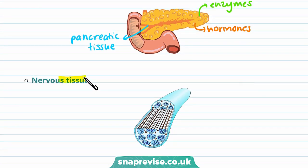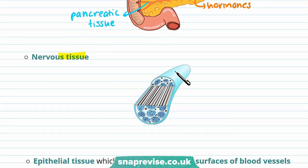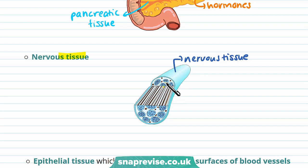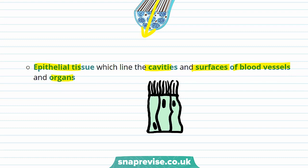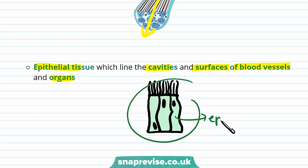Nervous tissue is another tissue. Nervous tissue allows information to be sent across the body through electrical impulses. Epithelial tissue is another type of tissue. This lines the cavities and surfaces of blood vessels and organs. This is an example of epithelial tissue.